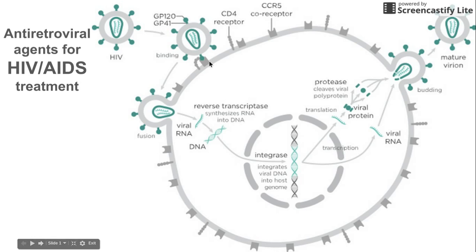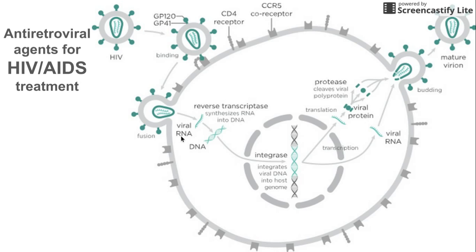The HIV viral envelope fuses — we have the process of fusion — fuses to the cellular membrane and lets in the virus. The virus breaks apart, releases its viral RNA, and performs reverse transcriptase. This is called reverse transcriptase because in cells we're used to seeing DNA to RNA. In this case, we're synthesizing DNA from RNA.